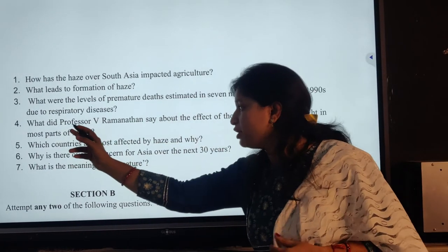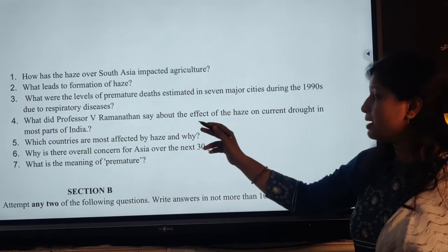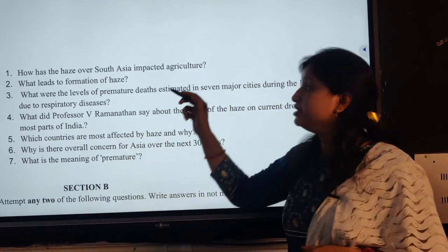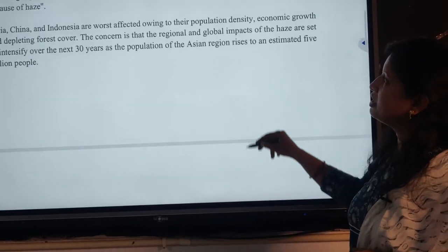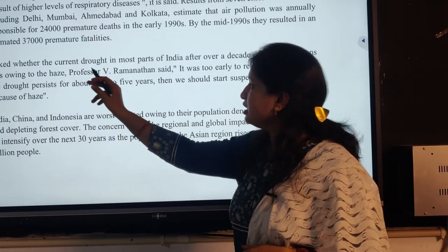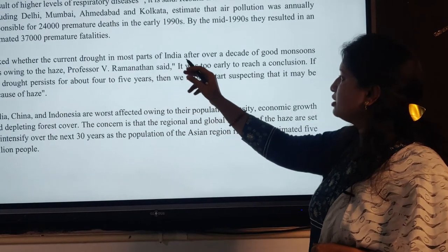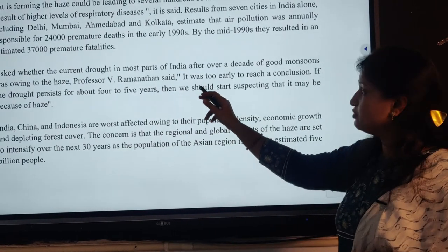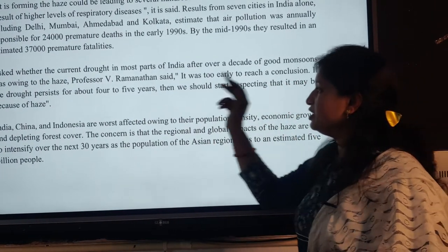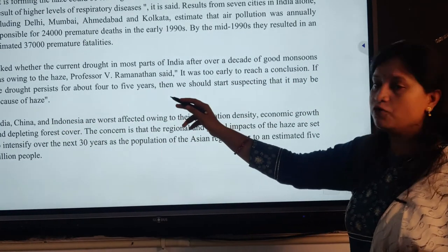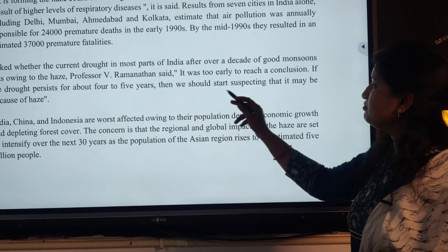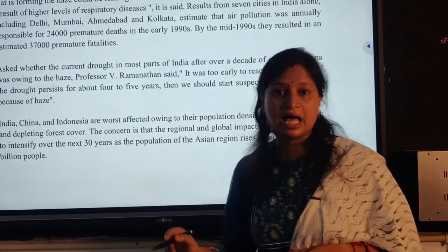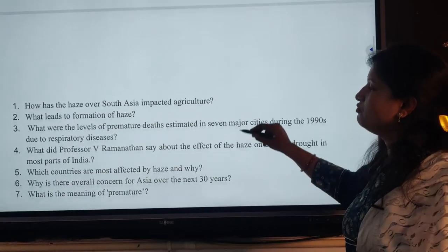Next question is number four: what did Professor V. Ramanathan say about the effect of the haze on the current drought in most parts of India? Professor V. Ramanathan said that regarding the current drought in most parts of India after over a decade of good monsoons, it was too early to reach a conclusion. But if the drought continues for about four to five years, then we should start suspecting that it may be because of haze. So this statement is the answer to question number four.